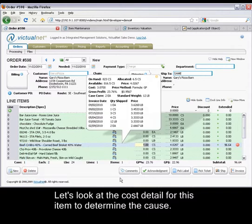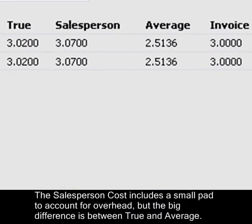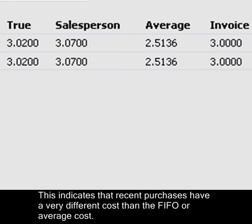Let's look at the cost detail for this item to determine the cost. The salesperson cost includes a small pad to account for overhead, but the big difference is between the true and average costs. This indicates that recent purchases have a very different cost than the FIFO or average cost.